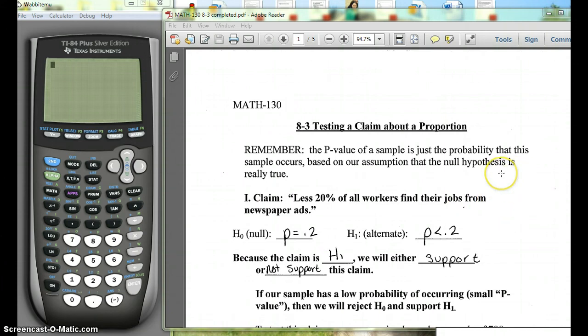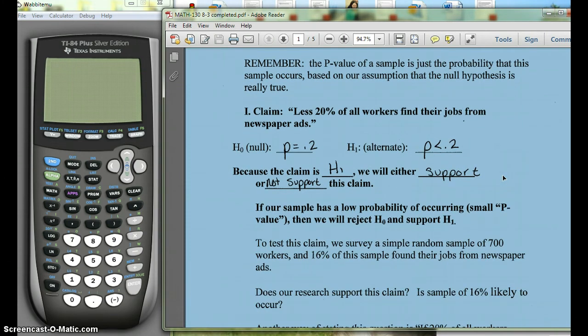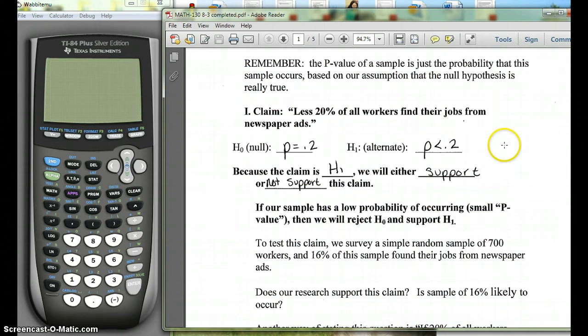Remember, we want to know if our p-value is less than our alpha to make our decision. So this will end up giving us our p-value. The claim that we're going to look at is less than 20% of all workers find their jobs from newspaper ads.